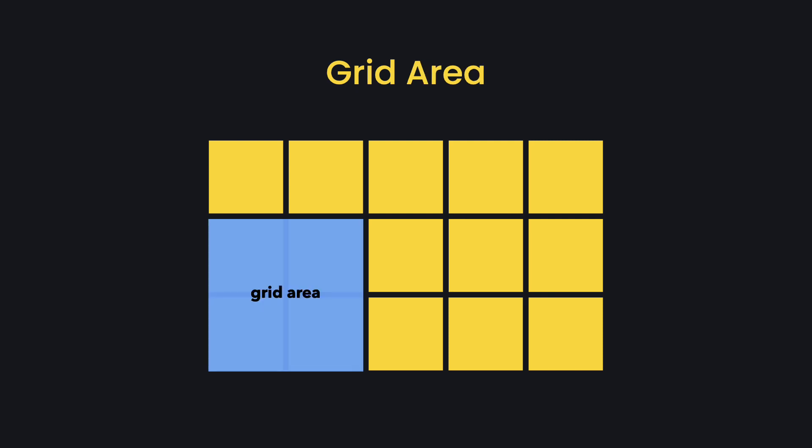One or more grid cells can be grouped into a grid area that can expand across multiple tracks. It must be rectangular in shape because they are bound by four grid lines.